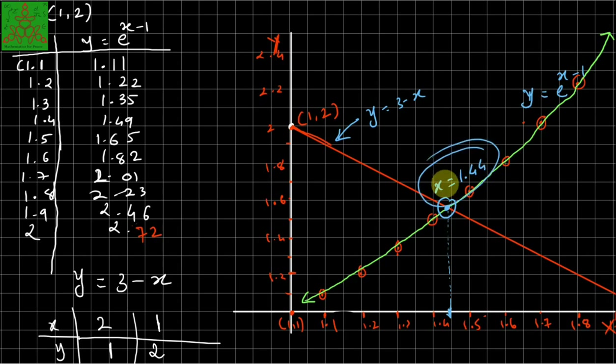The x-coordinate of the intersection point is approximately 1.44, which is the root of this equation.